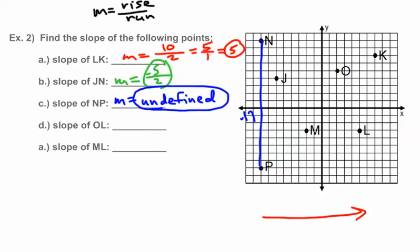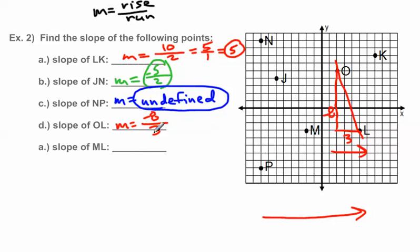Find the slope from O to L. Going from left to right, I'm going down, so the slope is going to be negative right off the bat. The rise is down 8, so negative 8. The run is over 3. So I have negative 8 over 3. I can't reduce this further, so that is the slope between points O and L: negative 8 over 3.